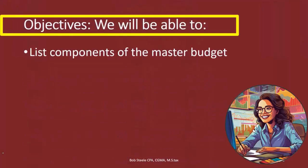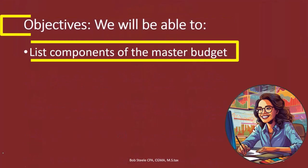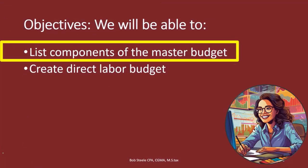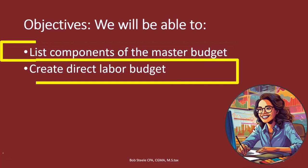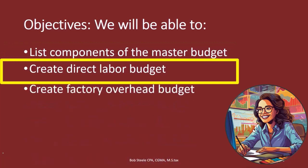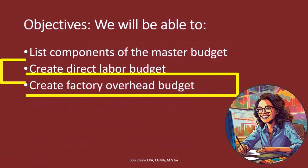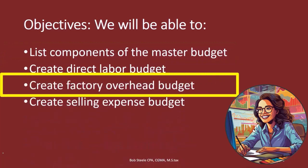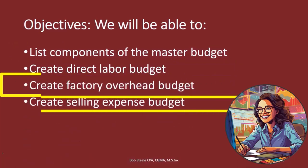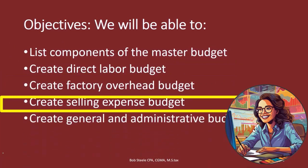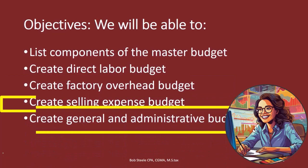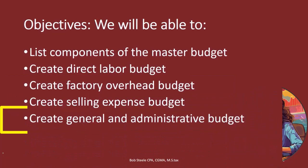We will be able to list the components of the master budget, create the direct labor budget, create the factory overhead budget, create the selling expense budget, and create the general and administrative budget.